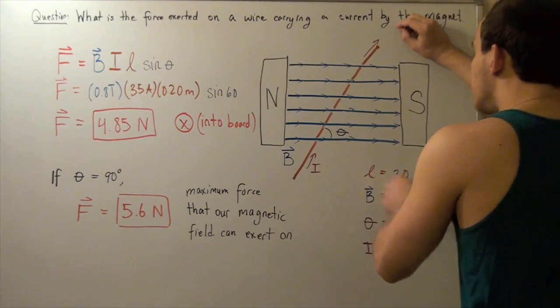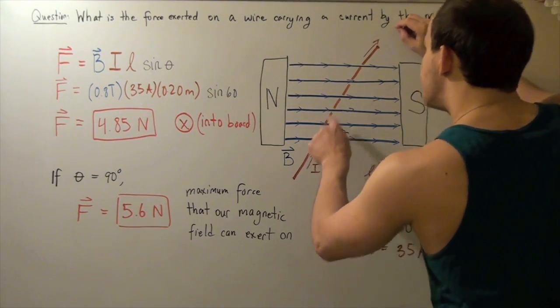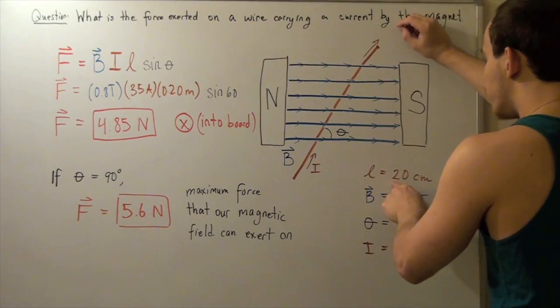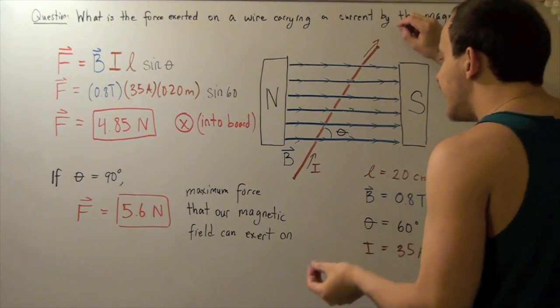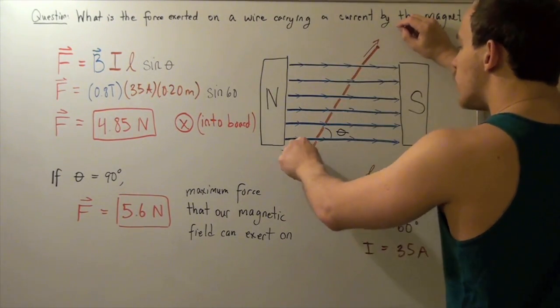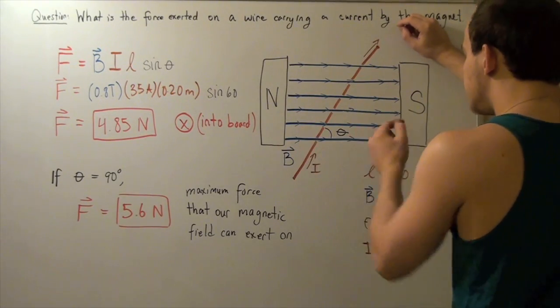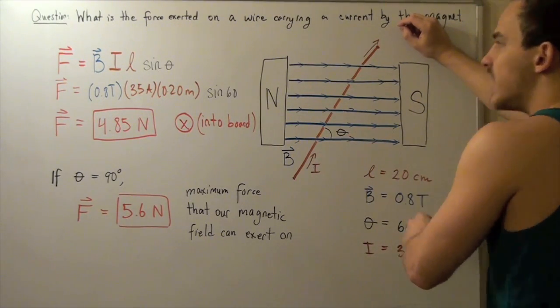Now, let's suppose the length of the wire from this point to this point is 20 centimeters, and the angle that our wire makes with respect to our magnetic field is 60 degrees.